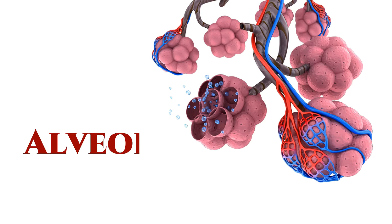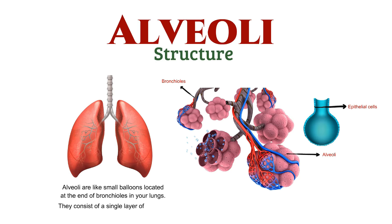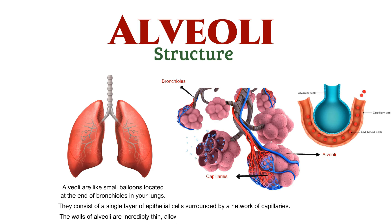Welcome to our video on the structure and functions of alveoli, the tiny but mighty structures in your lungs. Let's start by exploring their structure. Alveoli are like small balloons located at the end of bronchioles in your lungs. They consist of a single layer of epithelial cells surrounded by a network of capillaries. The walls of alveoli are incredibly thin, allowing for efficient gas exchange between the air and your bloodstream.